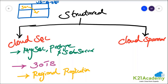So if you choose Cloud SQL, it supports MySQL, PostgreSQL, and SQL Server. The maximum size is 30 terabytes, and by default replication is regional. Cost is based on how much gigabytes or terabytes of data you store — each gigabyte has some cost per region.